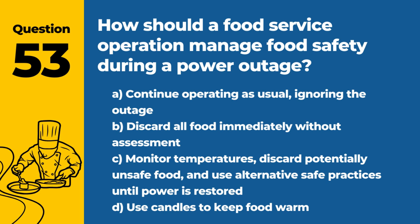Question 53. How should a food service operation manage food safety during a power outage? The answer is C: Monitor temperatures, discard potentially unsafe food, and use alternative safe practices until power is restored. Proper response to a power outage is essential to ensure food safety.